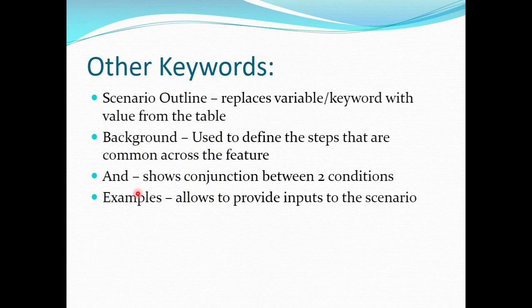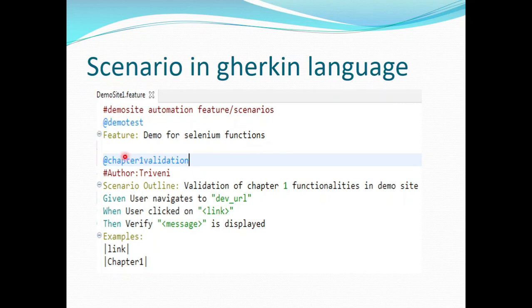The last keyword is Examples. As discussed while defining Scenario Outline, the Examples keyword is basically used to give all the test data to your feature file. If we go back and look, first we have the Feature, and now for a scenario where I want to give test data in the feature file itself, I'll use the Examples keyword to define that test data. Also, instead of using the Scenario keyword, you need to use Scenario Outline to give the description of that particular test scenario. So these are all the most used keywords in Cucumber.